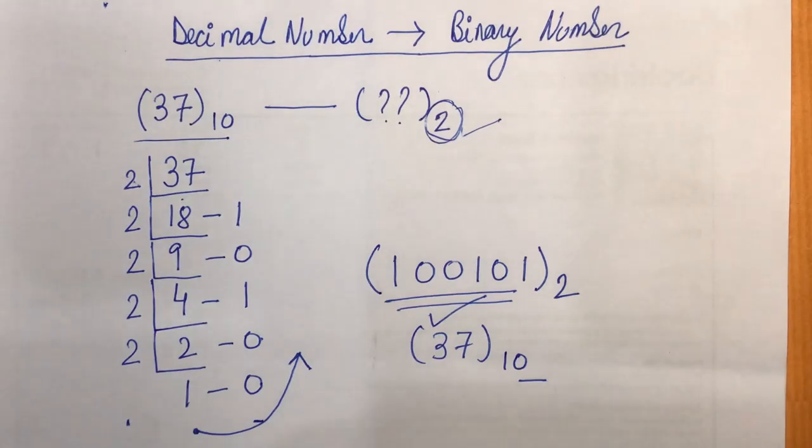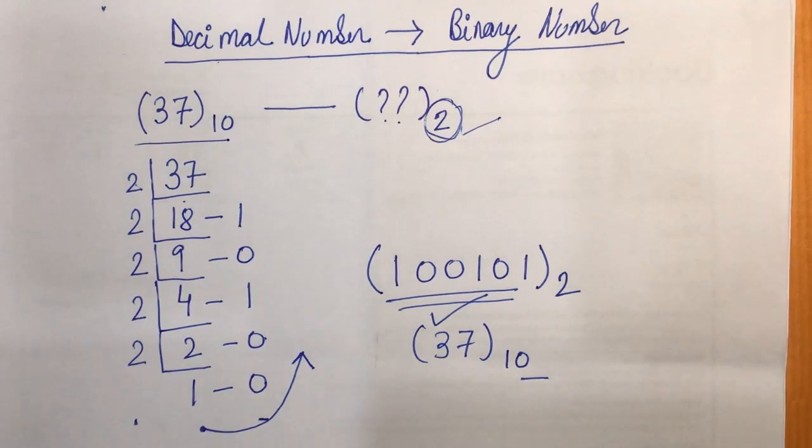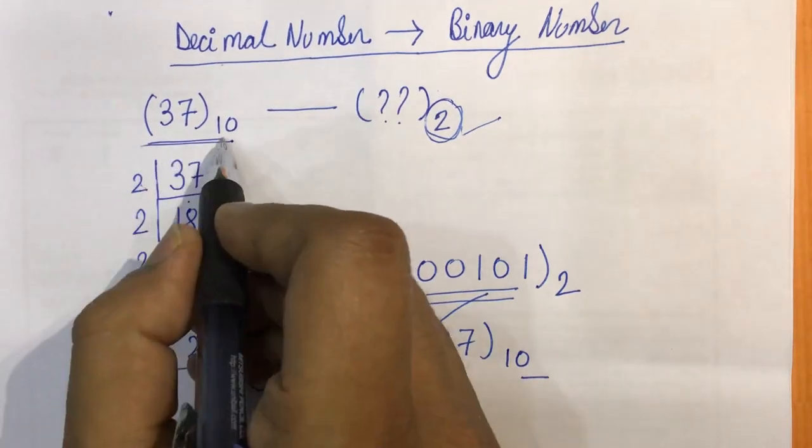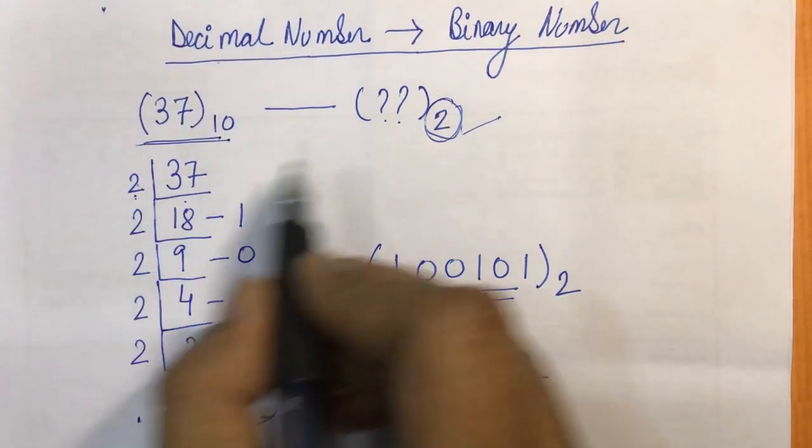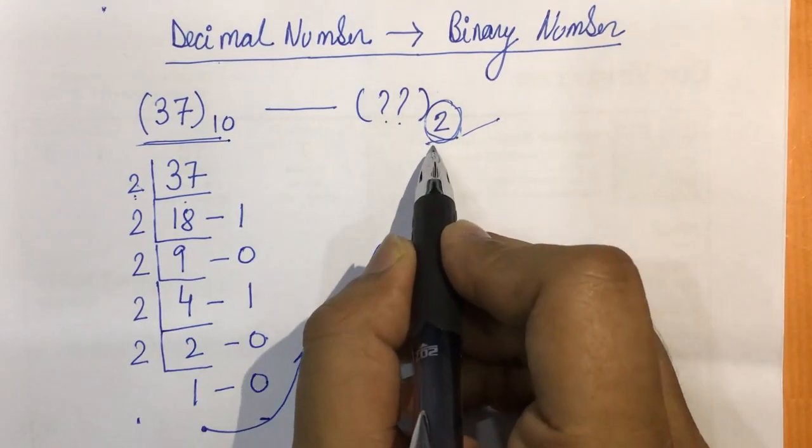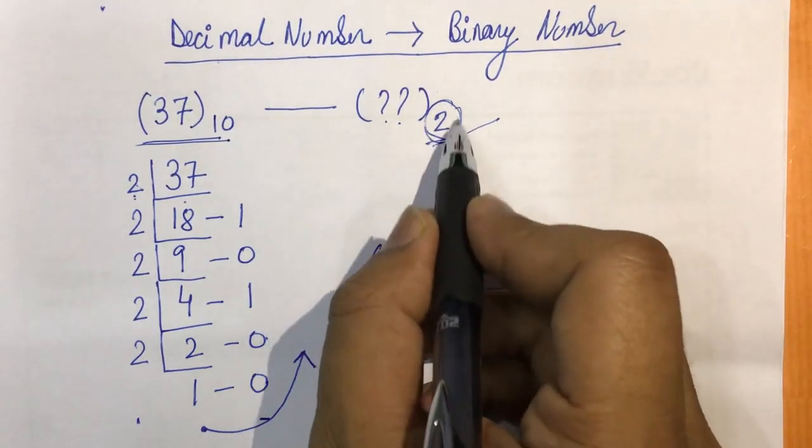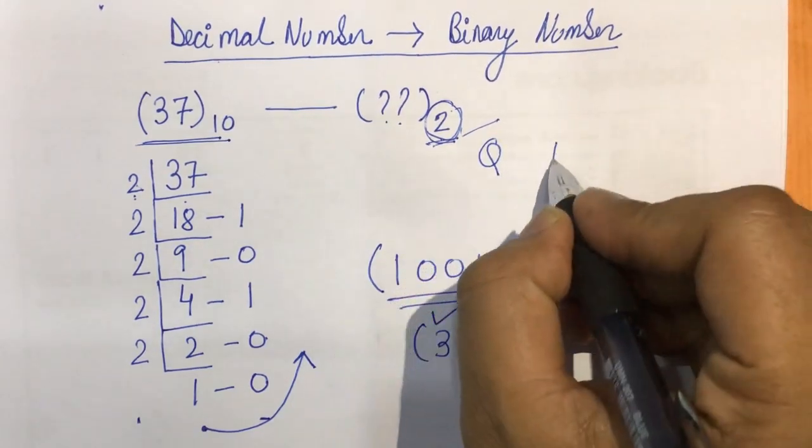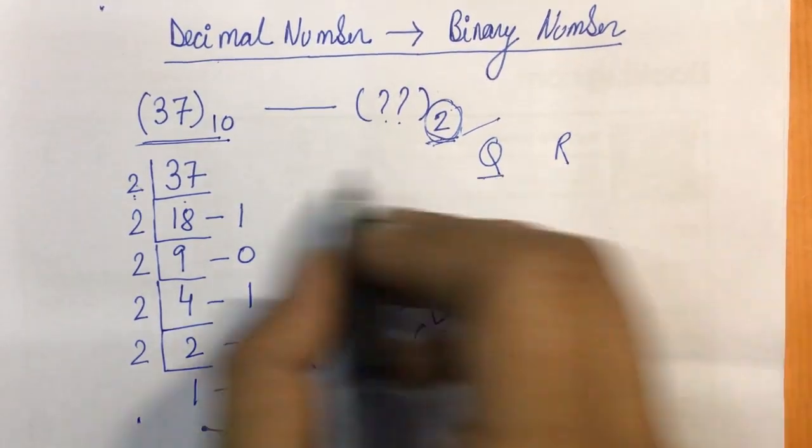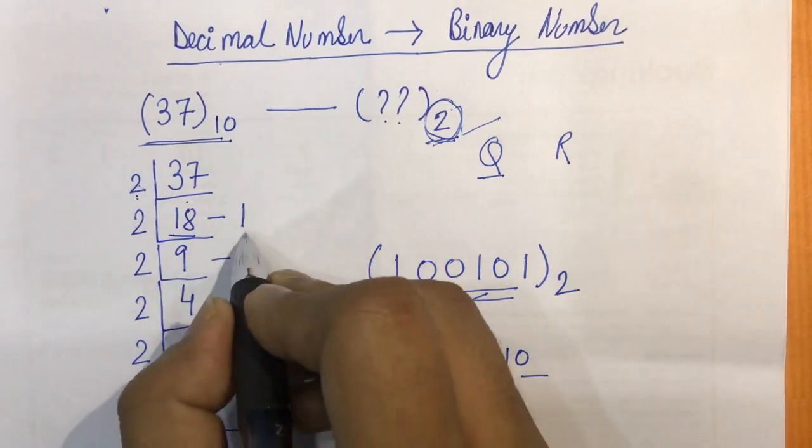I'll explain the process once again. We always divide it by 2, why? Because the base of a binary number is always 2. When you divide the number by 2, you get two things: one is the quotient and another one is the remainder. So the quotient will be written over here and the remainder over here.